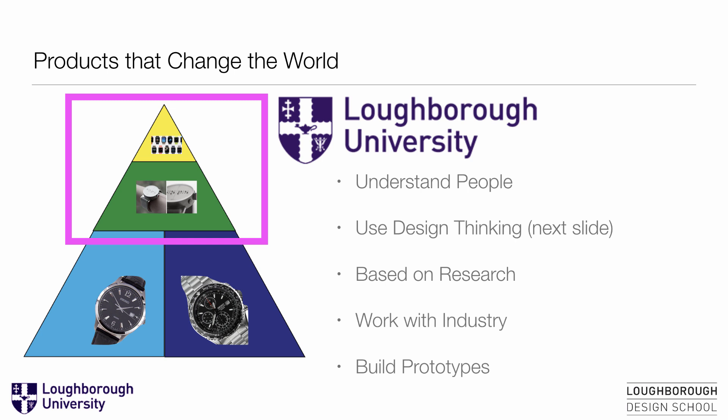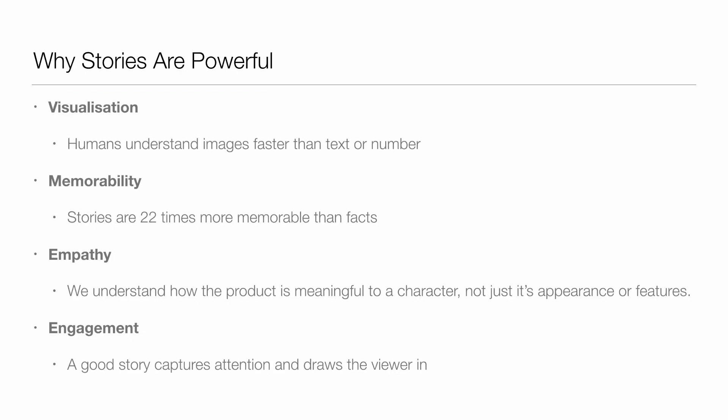We focus a lot on this at Design Thinking at Loughborough University because that is what makes it important — these are products that change the world. Why is a story so powerful? Because stories are visual, they are memorable, they are empathetic, and they create engagement. We understand images faster than text as humans — it's the way our brains work. And when we have a story, it is 22 times more memorable than pure facts, because we know the journey, we get engaged, it drives into our brain and our psyche better than just numbers or facts. So communicating the story is a great way to make your product have impact in the design phase.